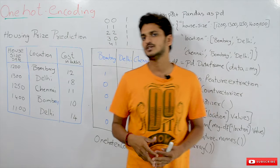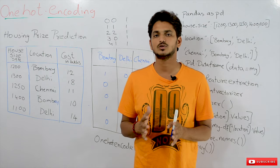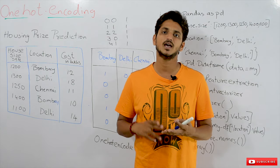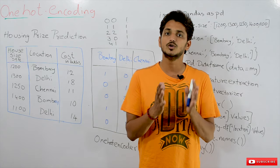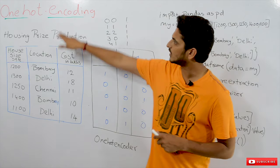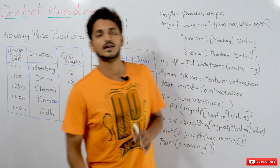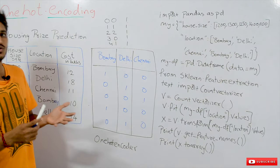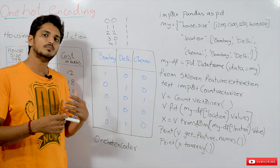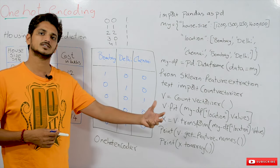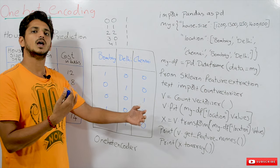In our previous classes we already discussed about some of the data pre-processing techniques — min-max scaling, normalizing and standardizing. These are on numerical data, but one-hot encoding is a technique on categorical data. The discussion about numerical data, categorical data, and text data was already made in our previous classes, so please watch those videos from the beginning and come back here.